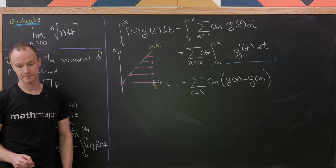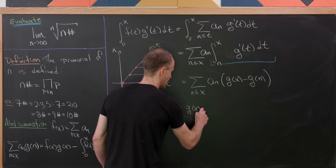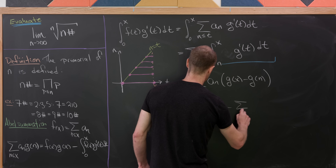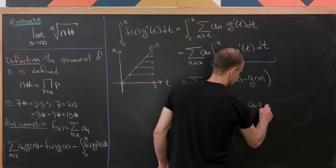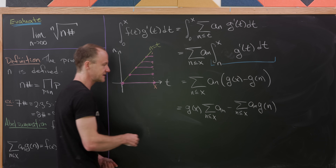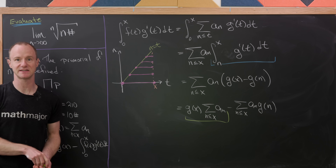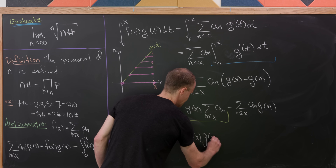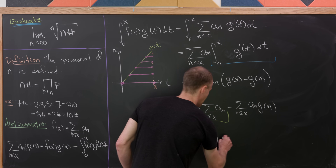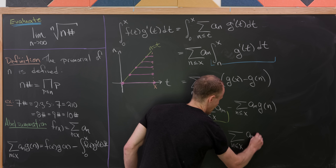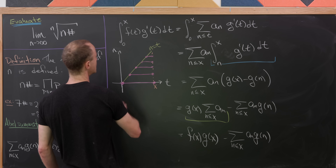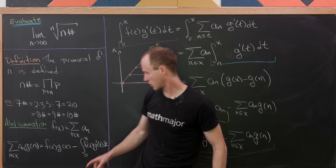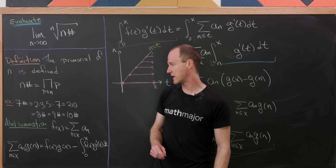Now the n summation is outside of the integral, so that means we can pull this a_n out. We're left with something inside the sum that is fairly easy to calculate using the fundamental theorem of calculus. This is going to turn into the sum as n is less than or equal to x of a_n times (g(x) minus g(n)). I'm going to split that into two pieces: g(x) times the sum of a_n, minus the sum of a_n times g(n). The first sum is exactly how we define f(x), giving us f(x)·g(x) minus the sum of a_n·g(n), which is a simple reordering to get to the standard form of Abel summation.